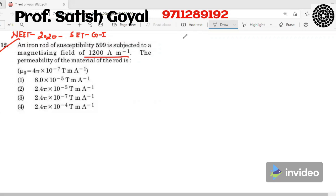This is actually a magnetism question. We know that the relative permeability is one plus chi. Magnetism is in class 12th chapter number 5 according to NCERT.